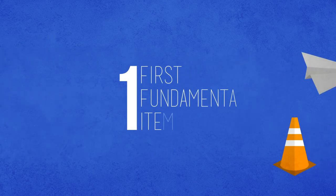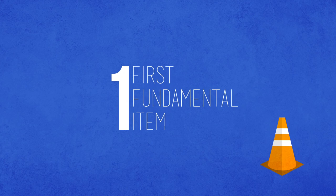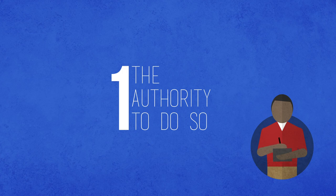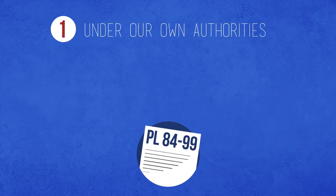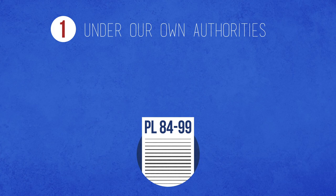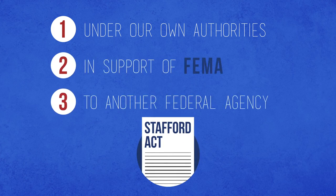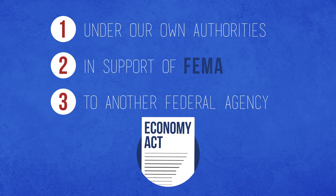The first fundamental item USACE must have to respond to disasters is the authority to do so. The major circumstances under which the Corps can respond to a disaster are under our own authorities through Public Law 84-99, in support of FEMA during a Stafford Act event, or to a federal agency other than FEMA under the Economy Act.